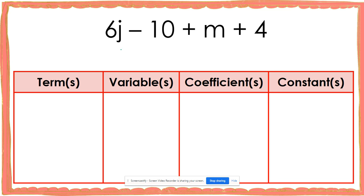Finally, let's look at the expression 6j minus 10 plus m plus 4. I'm going to look for terms by finding my plus and minus signs. I have a minus sign, a plus sign, and a plus sign — those are going to separate all of my terms. So my terms are going to be 6j, 10, m, and 4. For this expression, I have four terms: 6j, 10, m, and 4.